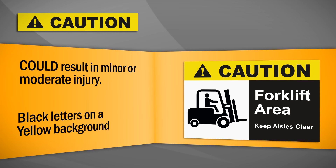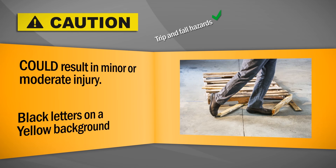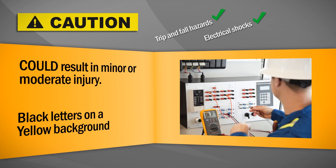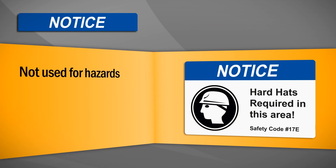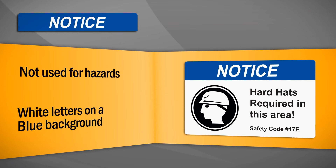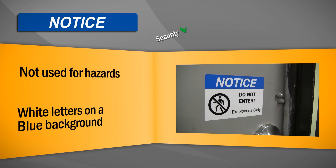Caution is used for hazard labeling as well, but only hazards which could result in minor or moderate injury. Caution signs are reserved for less serious hazards, like trip and fall hazards, non-life-threatening electrical shocks, and equipment that may cause minor injury.